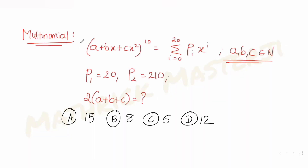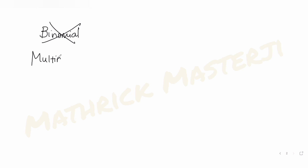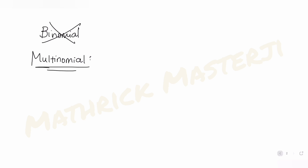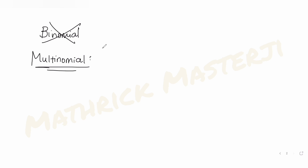Let's solve this. The first idea is I need to expand this entire thing, and that has more than two terms. When I have that, I cannot apply binomial theorem. So I will use the idea of the multinomial theorem to find the expansion of (a + bx + cx²) raised to 10.